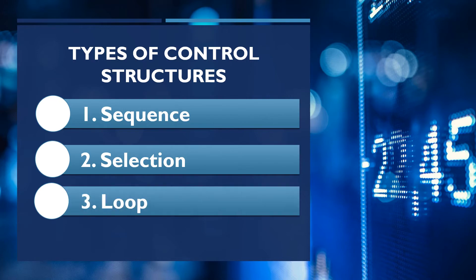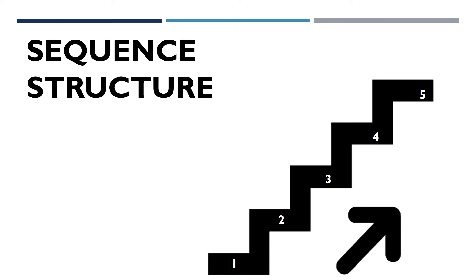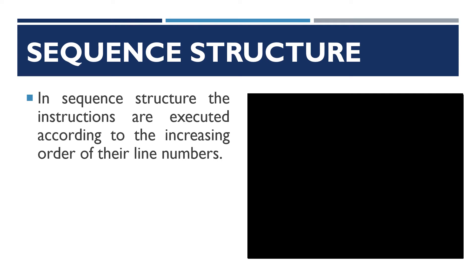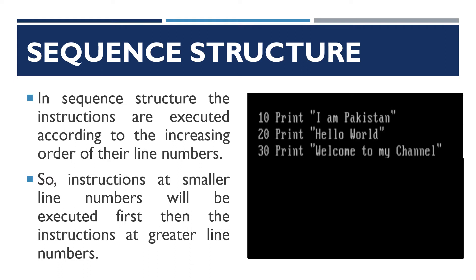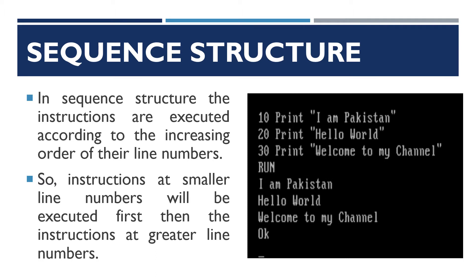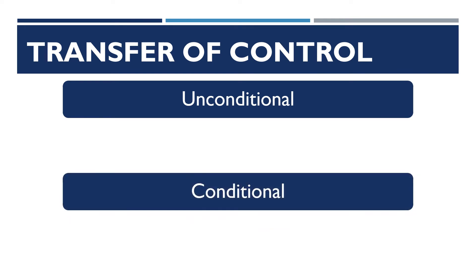The three types are sequence, selection, and loop. Sequence means that you have to move in sequence from the smallest line number to the greatest one. In a sequence structure, the instructions are executed according to the increasing order of their line numbers, so instructions at smaller line numbers will be executed first, then instructions at greater line numbers. For example, in a program with line numbers 10, 20, and 30, line 10 will be executed first, then 20, then 30. You can see the output.